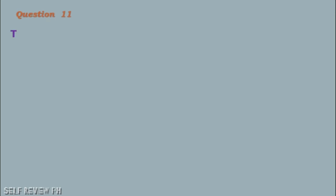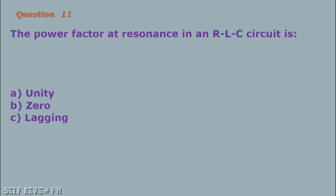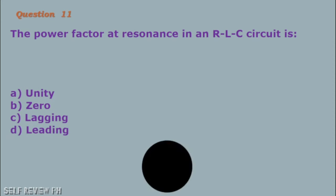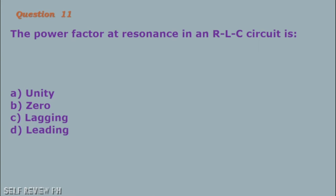Question number 11: The power factor at resonance in an RLC circuit is: A. Unity B. Zero C. Lagging D. Leading. The correct answer is letter A, unity.